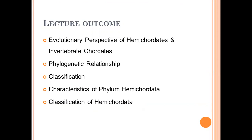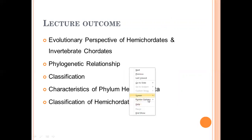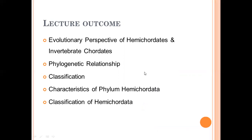First, we will study the Hemichordates and Invertebrate Chordates and their evolutionary perspective — in which period they evolved. Second, we will see the phylogenetic relationship with the rest of the members. Then we will see the classification of Hemichordates, study the characteristics of phylum Hemichordata, and finally the classification of Hemichordates.